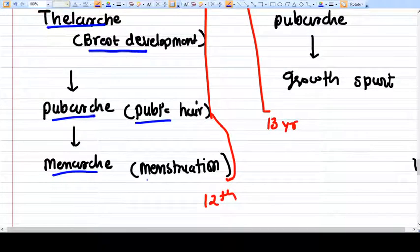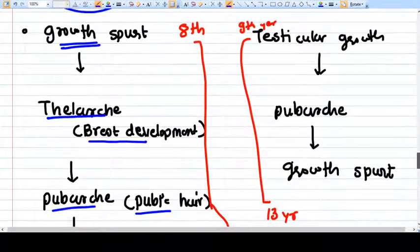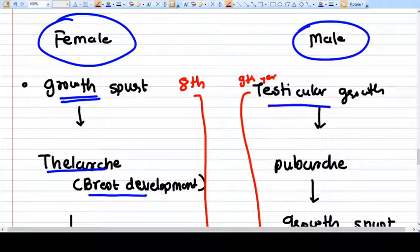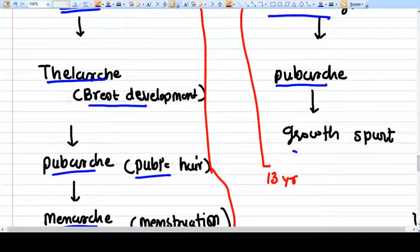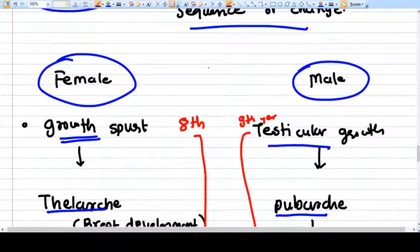Menstruation is the last sequence of puberty. In males, the first thing is testicular growth, then comes pubarchy which means pubic hair, and then comes the growth spurt. If you see the timeline, the female is ahead of male by one year.